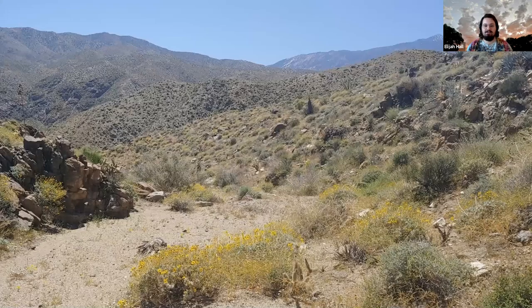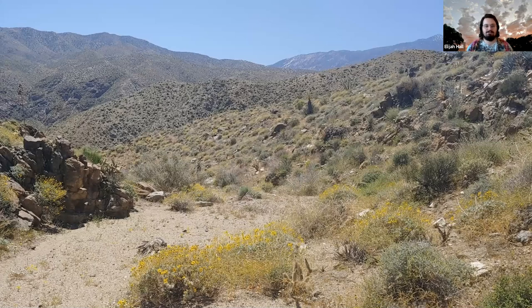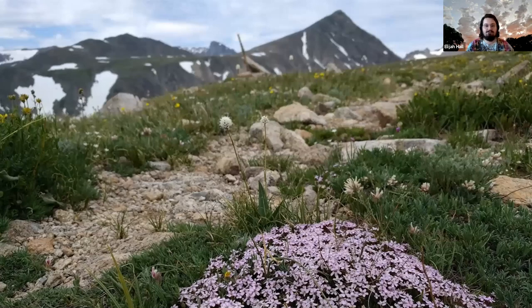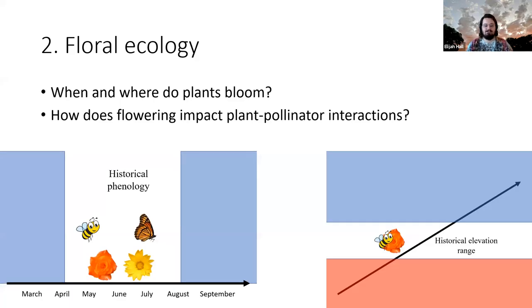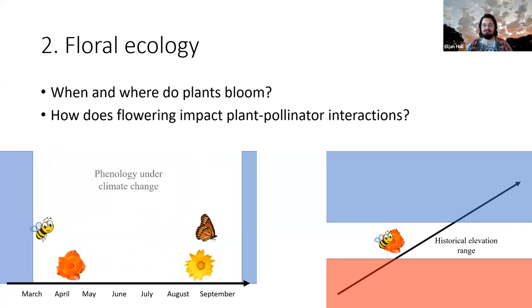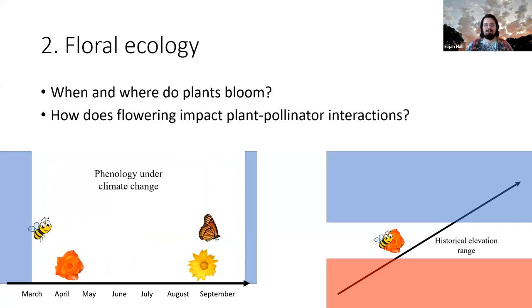I'm a pollination ecologist, which means I study the interactions between plants and pollinators over time and space. I'm particularly interested in the impacts of climate change on pollination. I've studied pollination ecology in cool environments including the San Jacinto mountain range in Southern California, the Rocky Mountains of Colorado, the plains in North Dakota, and the White Mountains of California. I don't personally own a garden, but I can speak from the perspective of an ecologist.